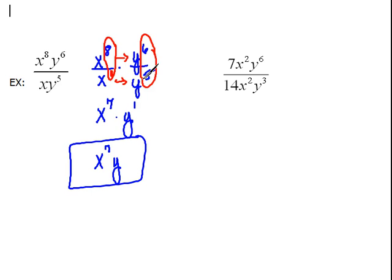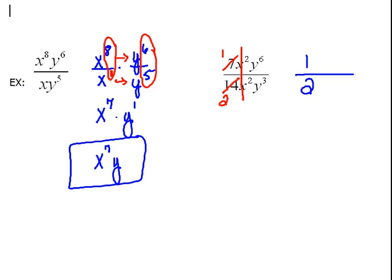For the next example, I'm not going to separate them out. We're going to look at numbers first and then each letter. So 7 over 14 — we can cancel out a common factor of 7 on top and bottom. 7 goes into 7 once and into 14 two times, so we have a 2 on the bottom and a 1 on top. As far as our x's, we've got x squared on top and x squared on bottom — that's the exact same thing, so we can cancel that out.